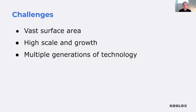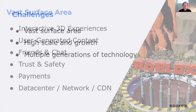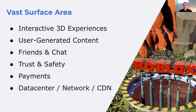Roblox has some pretty stiff challenges when it comes to observability. There's a huge amount of surface area to the product, we're operating at very high scale, and our backend includes several generations of technology working alongside each other. Roblox consists of these interactive 3D experiences filled by user-generated content. There's also a social element with chat and notification features. In order to keep this platform safe for all ages, we have very deep trust and safety systems working behind the scenes. We support a full economy involving payments and virtual currency, all running on data centers we've built on a large network, including a custom CDN.